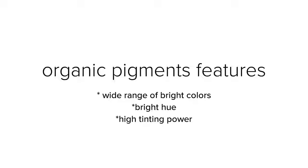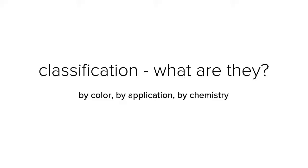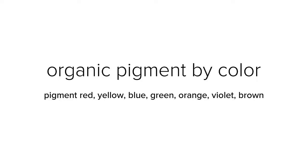Organic pigments can be classified by different dimensions. When classified by color, they can be divided into pigment red, yellow, blue, green, orange, violet, and brown.